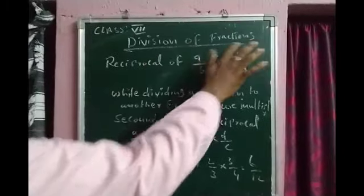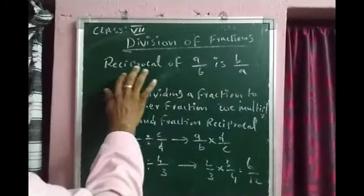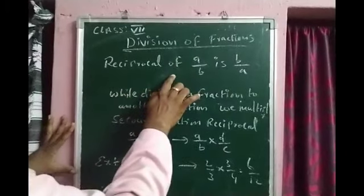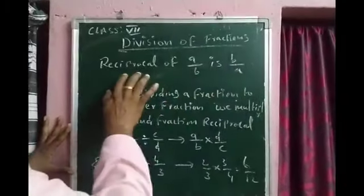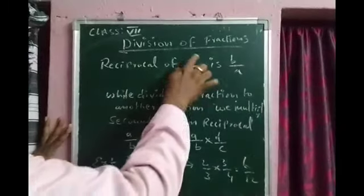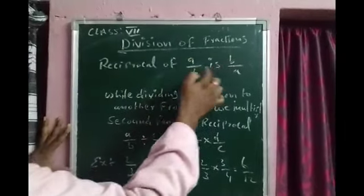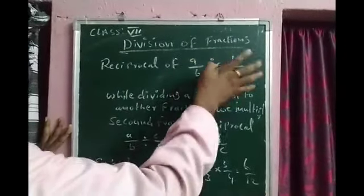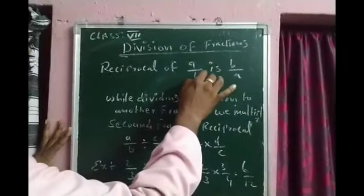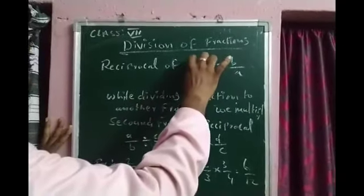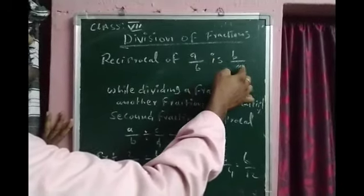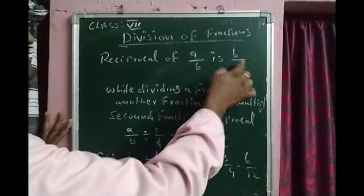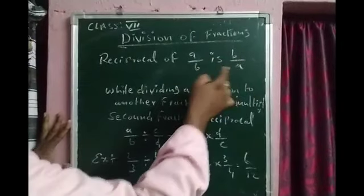Division of fractions. The reciprocal of a by b is b by a. Reciprocal means the given fraction reversed — a by b becomes b by a. The reverse of any fraction is the reciprocal of the given fraction.